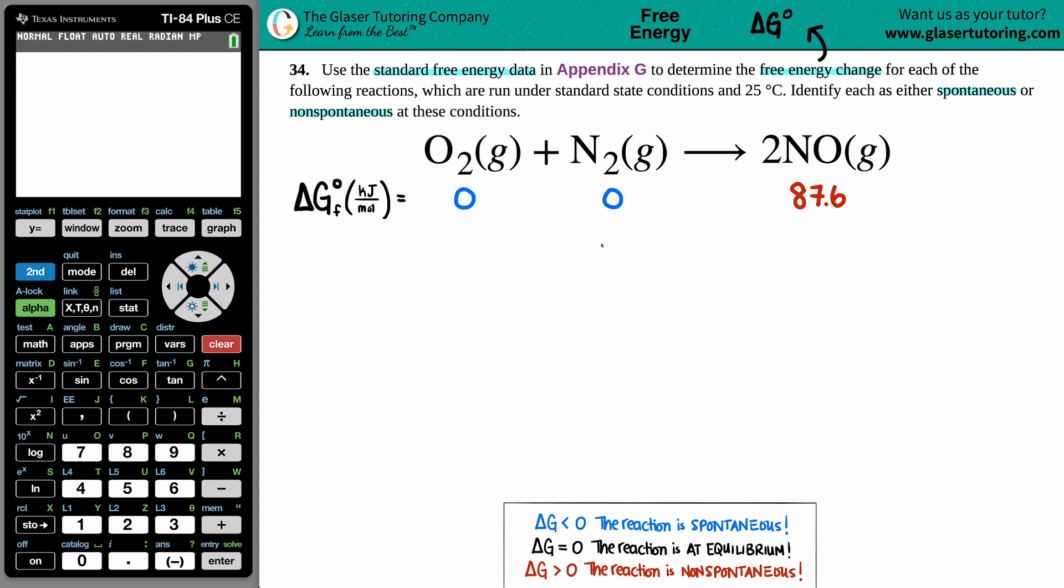So I went to the back of the textbook to find out what those values are. For all elemental substances, so your diatomics, O2 gas and N2 gas, you have zero kilojoules per mole. So zero delta G. NO has 87.6.